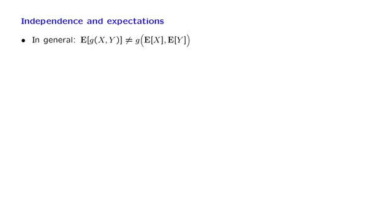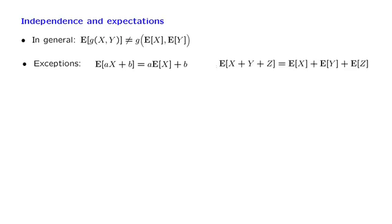And we also know that there are some exceptions where we do get equality. This is the case where we are dealing with linear functions of one or more random variables. Note that this last property is always true and does not require any independence assumptions.